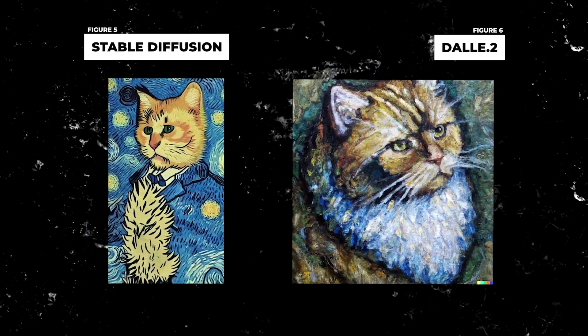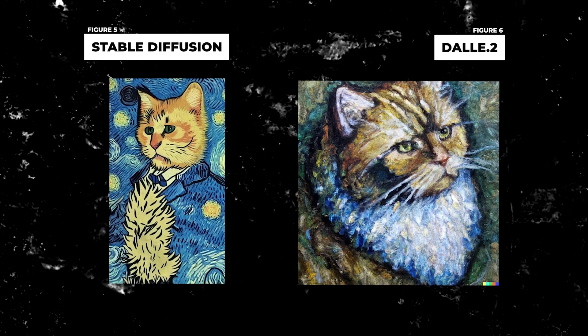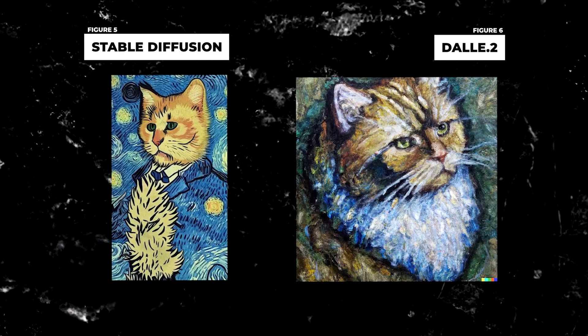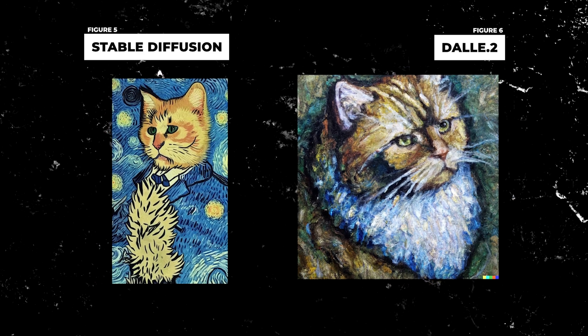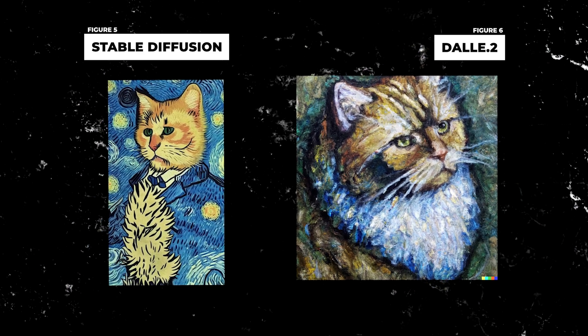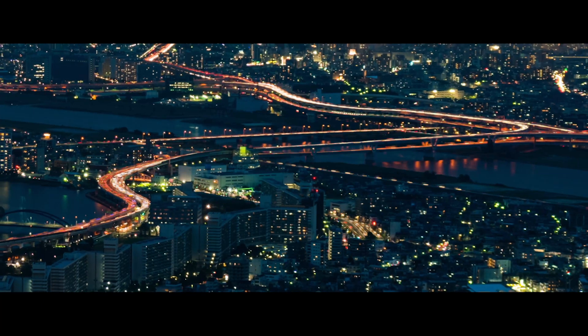Let's try another artistic photo: 'Portrait of a Cat, Art by Van Gogh.' This is a close one. Stable Diffusion created a portrait that is very similar to the iconic Van Gogh painting, but DALL-E 2 also did a great job on this one. I will let you decide on the winner — let me know in the comments.